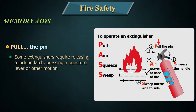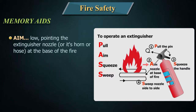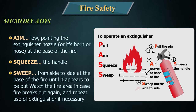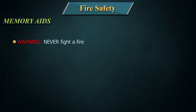Aim low, pointing the extinguisher nozzle, horn, or hose at the base of the fire. Squeeze the handle — this releases the extinguishing agent. Sweep from side to side at the base of the fire until it appears to be out. Watch the fire area in case fire breaks out again and repeat the use of the extinguisher if necessary.